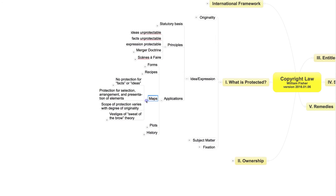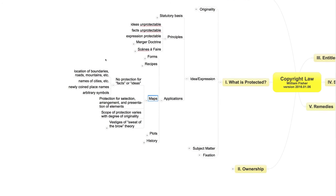Maps have been protected by copyright law for a long time, but not all components of maps enjoy copyright protection. For example, the location of roads, mountains, rivers, and political boundaries, and the names of cities and towns are all excluded from copyright protection. Thus, you can copy such things from someone else's map onto your own without running afoul of the law.